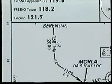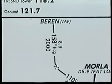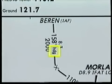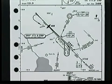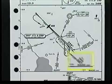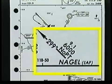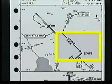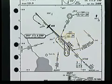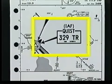On some routes, you must fly a heading rather than receive course guidance from a navigation facility. Where this occurs, the letters HDG are printed near the route. The initial approach fixes are indicated on the plan view with the notation IAF. In this example, there is an initial approach fix at Nagel intersection and another on the DME arc at the 122 degree radial of the Terps VOR. There is also one located at Quist.